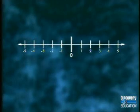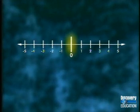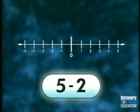When subtracting integers on a number line, always begin at zero. To subtract integers on a number line means to reverse direction, or move in the opposite direction.